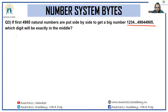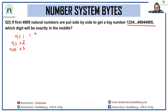Let's count digits used: single-digit numbers (1–9) contribute 9 digits; two-digit numbers contribute 180 digits; three-digit numbers contribute 2700 digits.